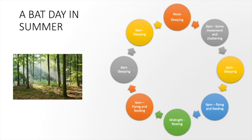Here's a diagram telling us about a typical day for a bat in summer. At noon a bat would be asleep. At 3 p.m. there would be some movement and chattering. At 6 p.m. the bat would be sleeping. At 9 p.m. it would be flying and feeding. At midnight the bat would be resting. At 4 a.m. it would be flying about and feeding. At 6 a.m. and 9 a.m. it would be sleeping. So that gives us an idea of how a bat would spend a typical day in the summer.